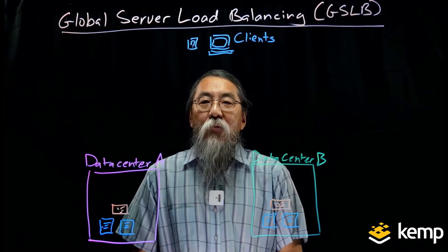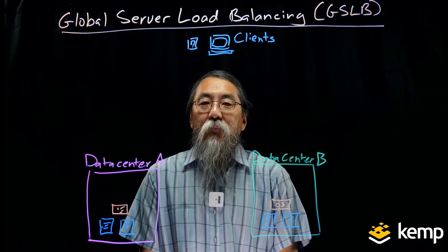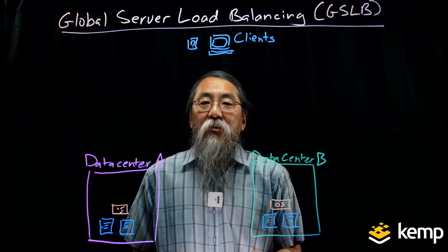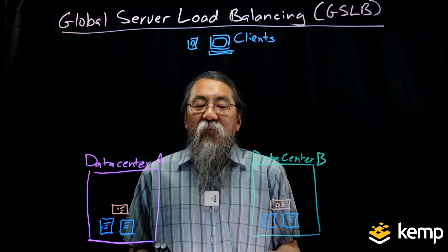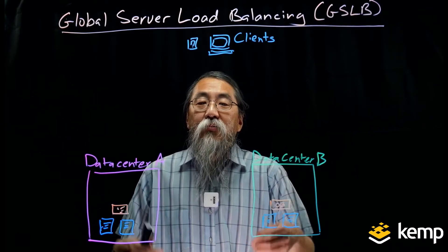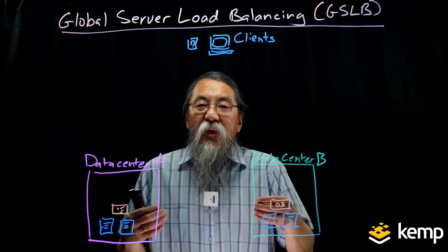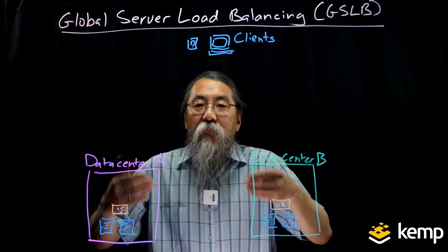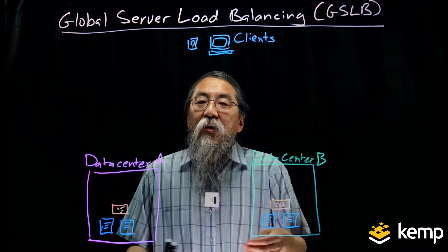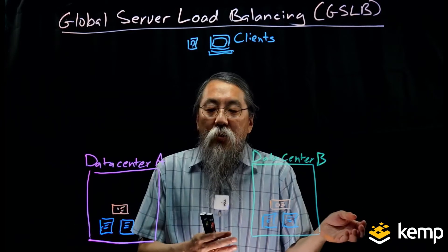Hello everybody. Today we're going to talk about global server load balancing, or GSLB. GSLB is a very popular technology for most load balancers. It provides application availability when the application resides in multiple sites. This is important because we need to have application availability across these sites for disaster recovery, for global presence, for geographic purposes, or any other reason.